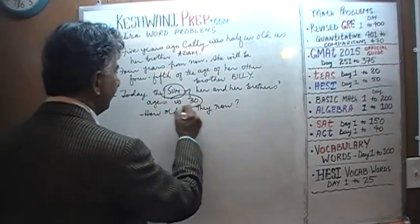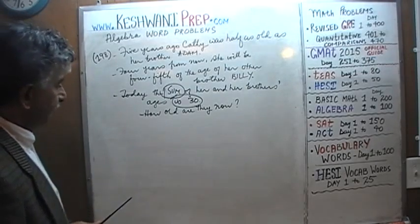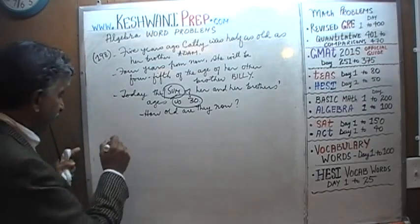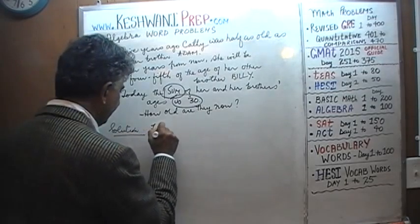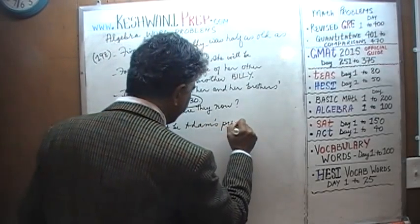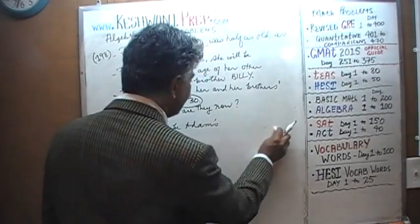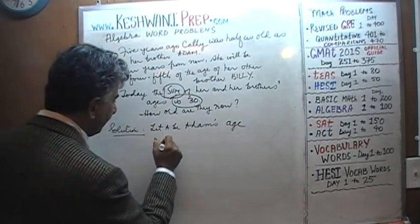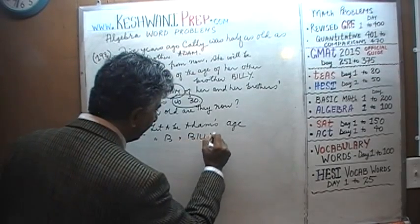These three sentences are the three equations. Let's start with the most straightforward one — the sum equals 30. But first, let's define our variables. Let A be Adam's present age.